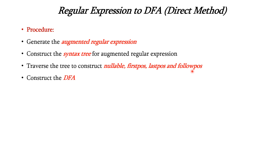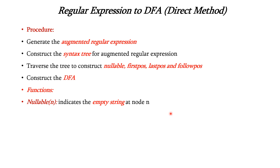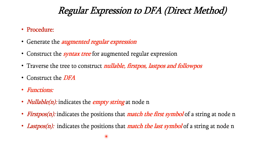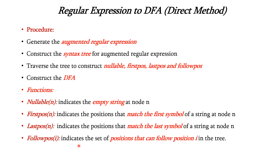Now let us see about these four functions. Nullable of n indicates the empty string or epsilon at the node n. First position of n indicates the positions that match the first symbol of a string at the node n. Last position of n indicates the positions that match the last symbol of a string at the node n. And follow position of i indicates the set of positions that can follow the position i in the syntax tree constructed.